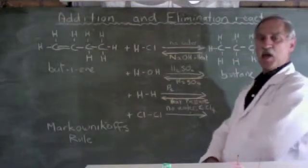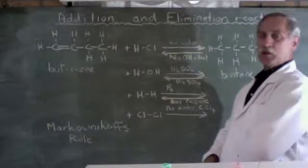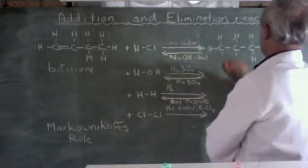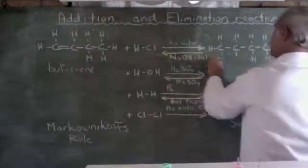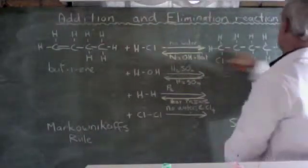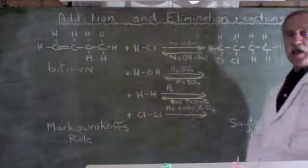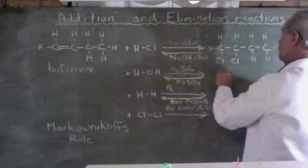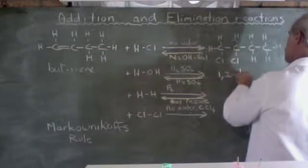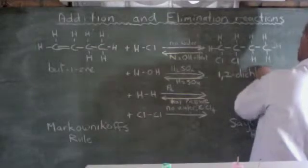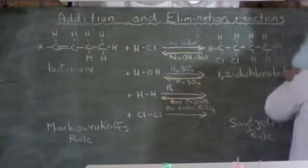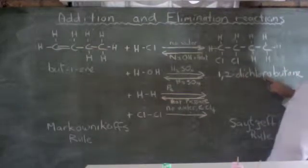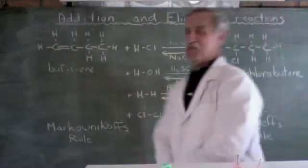But what if we were to add a chlorine to our original but-1-ene? Chlorine, Cl2. Again, we have broken this bond and we're going to add a chlorine and a chlorine. So it's butane with two chlorines. It's a halo alkane. How do we name it? We're going to call it 1, 2-dichlorobutane. 1 carbon, 2 carbon, di meaning there's two of them, dichlorobutane. So there's our four substances which we've added.